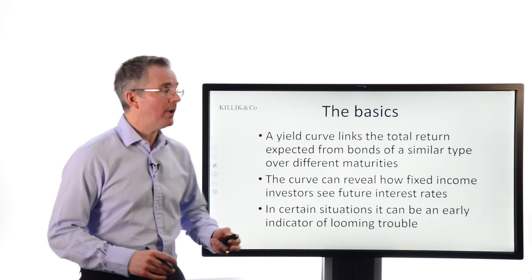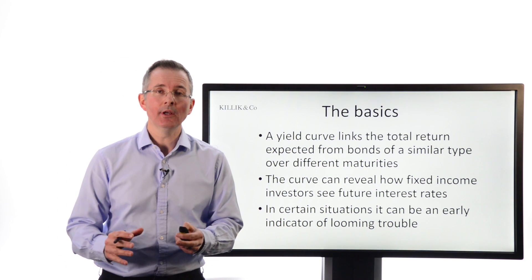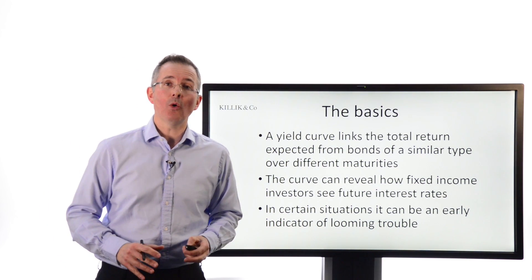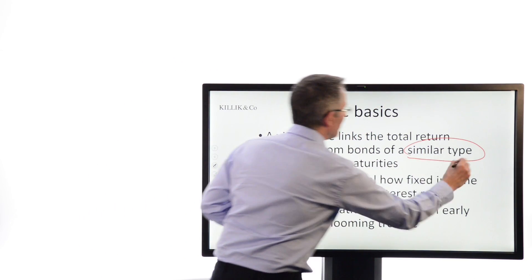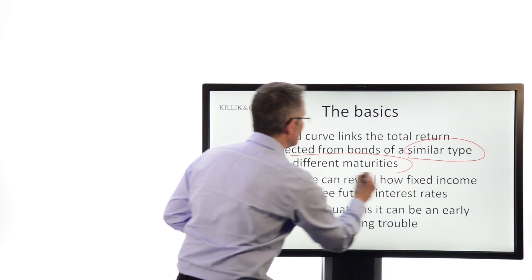So the basics. First of all, a yield curve links the total return, usually the gross redemption yield or yield to maturity as it's known, on bonds of a similar type. That's important but with different maturities.